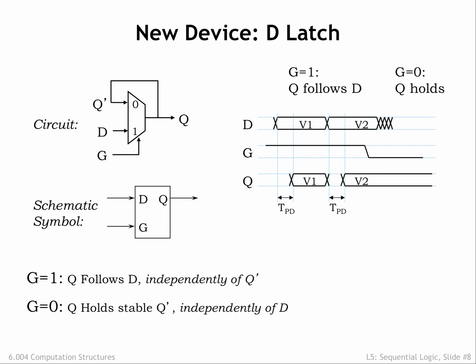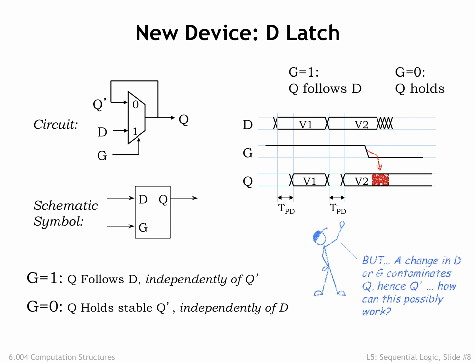Our theory is that after G transitions to a low value, Q will stay stable at whatever value was on D when G made the high to low transition. But in general we can't assume anything about the output of a combinational device until TPD after the input transition. The device is allowed to do whatever it wants in the interval between TCD and TPD after the input transition. So how will our memory work if the 1 to 0 transition on G causes the Q output to become invalid for a brief interval? After all, it's the value on the Q output we're trying to remember.